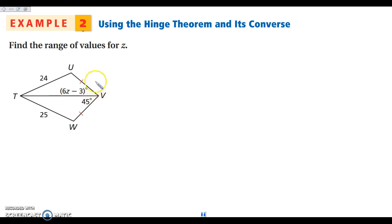Again, let's look at our two triangles. I know that UV and VW are congruent, and again I have this reflexive TV that is shared. So I know that since this is 25 and this is 24, that 45 has to be bigger than this angle. So I can set up that 6z minus 3 has to be less than 45, because again 45 is that larger angle.